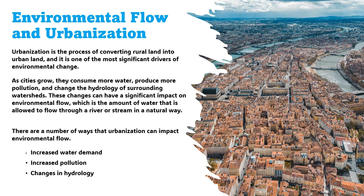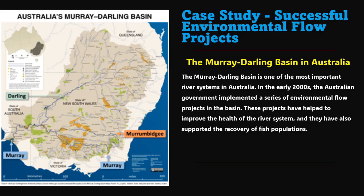Reducing pollution can be addressed by using wastewater treatment plants, stormwater management systems, and industrial pollution controls. Protecting riparian areas along the borders of rivers and streams can filter out pollutants before they reach the waterway. These are some of the key ways to control pollution from urbanization for successful environmental flow management.